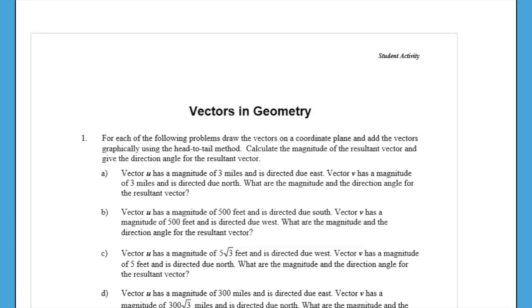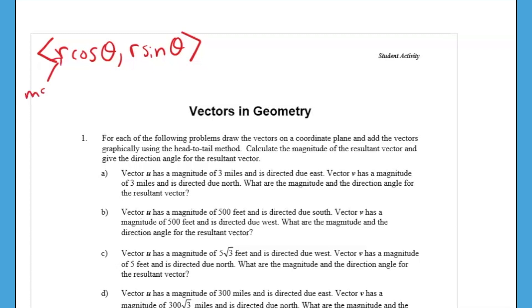With component form of vectors, just as a reminder, the x-coordinate is r cosine of theta, and the y-coordinate is r sine of theta, where r is the magnitude of each vector and theta is the direction of each vector.